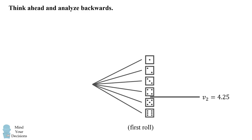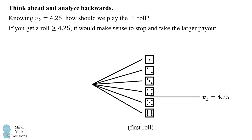Knowing that the second roll can give us an average of 4.25, how should we play the first roll? Just like before, we analyze this logically. If we get a roll that's larger than this average payout, 4.25, it would make sense to stop and take the larger payout. In this case, this would be for the rolls 5 and 6.